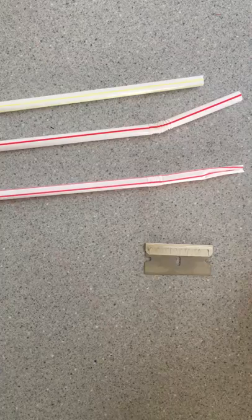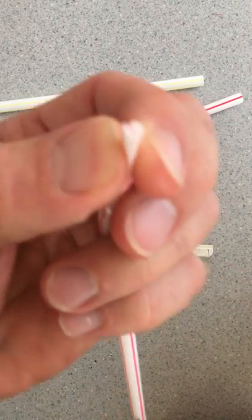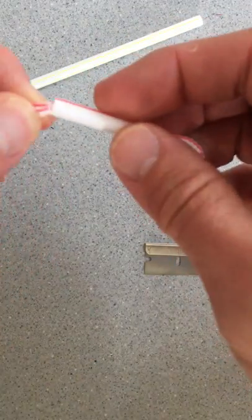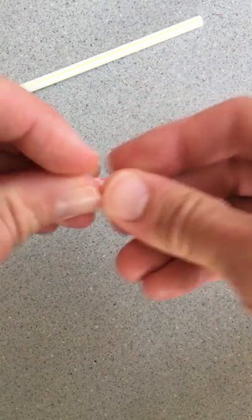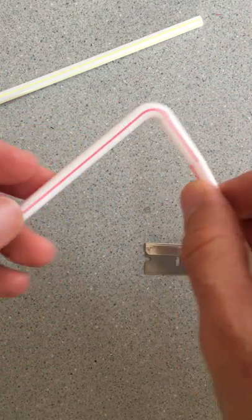The first one is called the pinch and insert and this one is pretty simple. You're just going to pinch one end of the straw and insert it into another open end and you've got a nice strong joint to work with there.